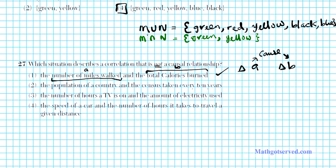Let's look at option B. For B, we have population of a country and we have the census taken every 10 years, basically the frequency of the census. Is this a causal relationship? Does the number of people determine if the census is taken every 10 years? If the population grows, does that mean there is going to be a census or not?